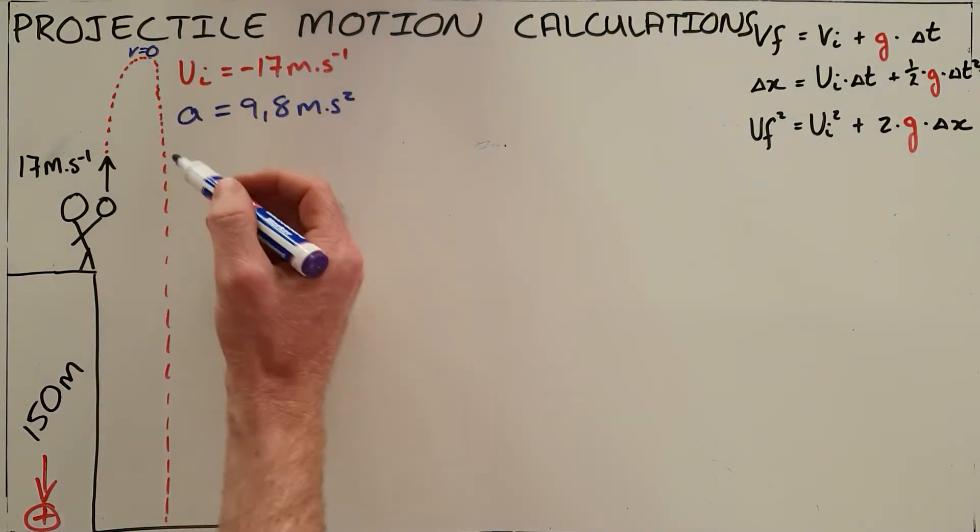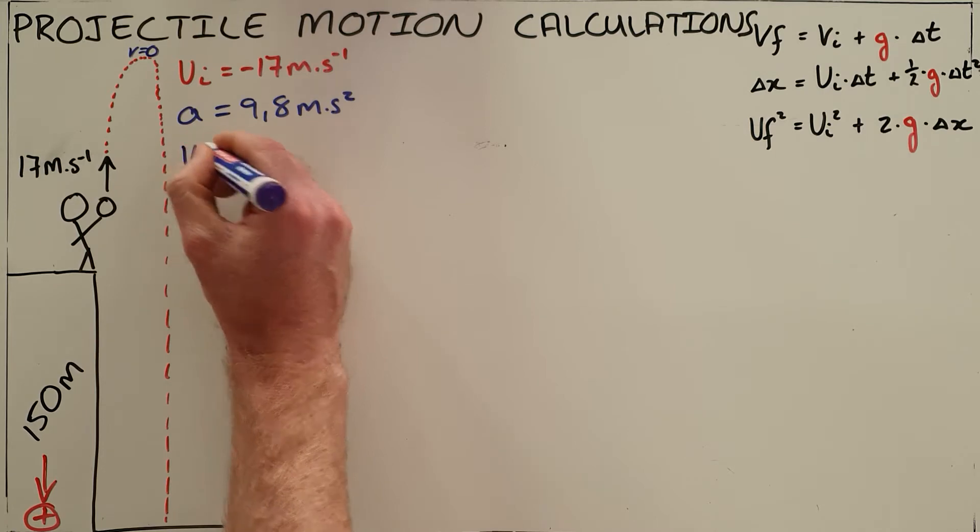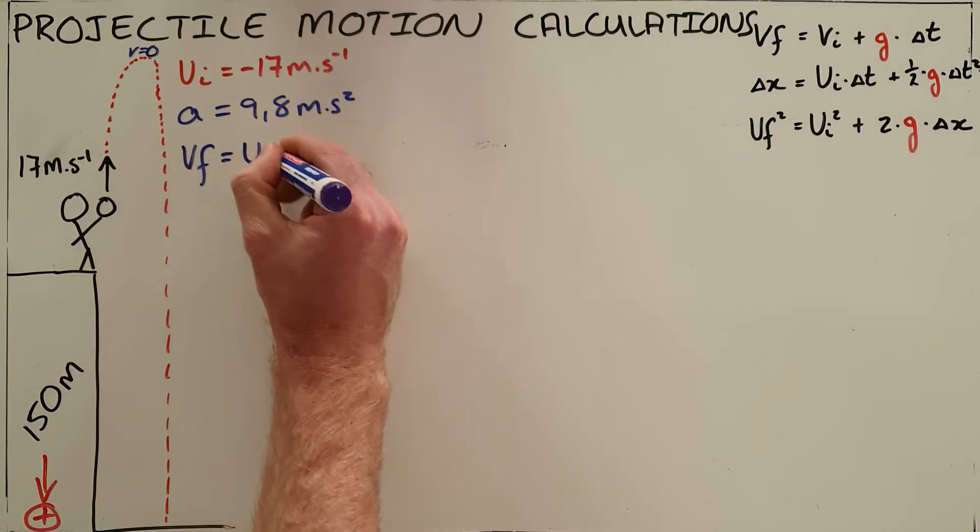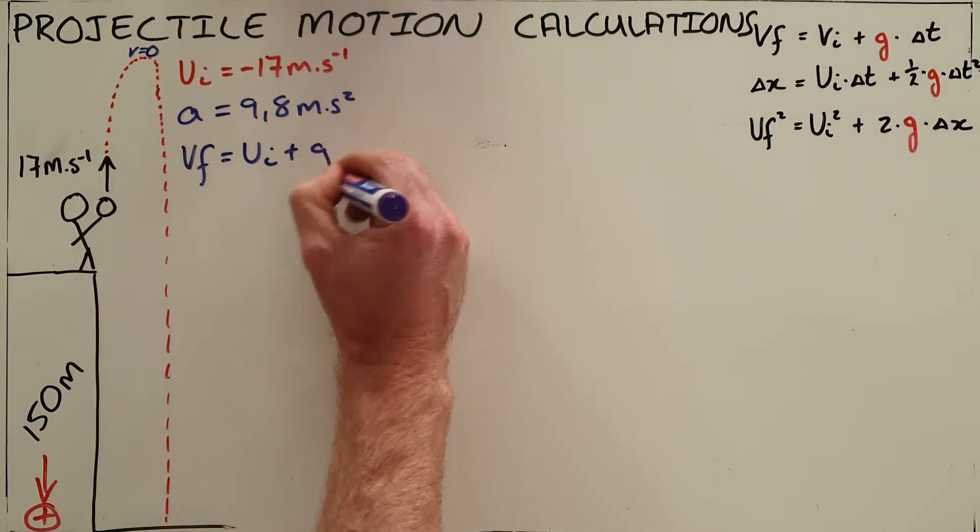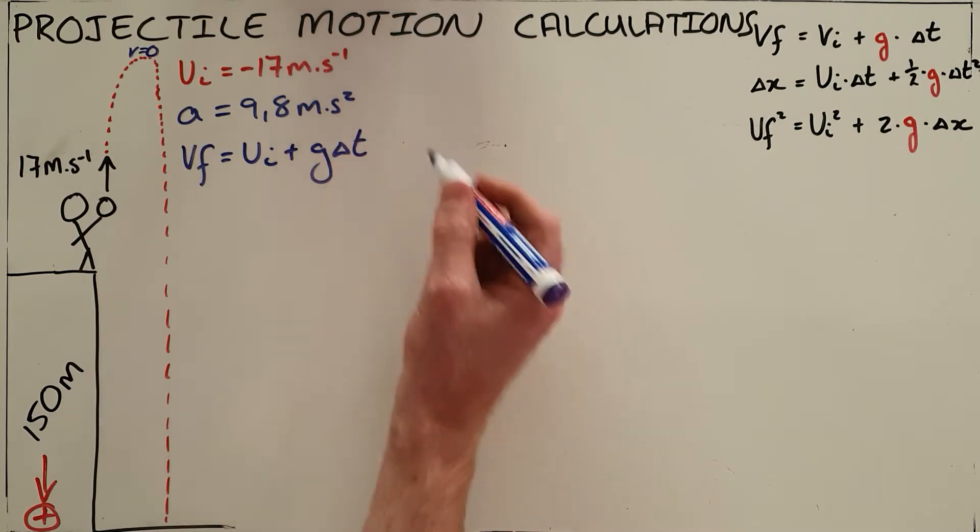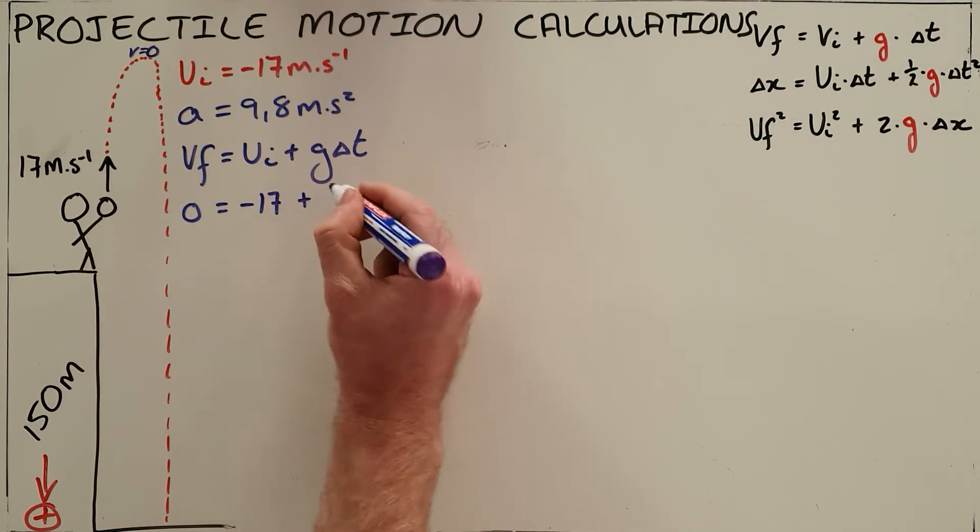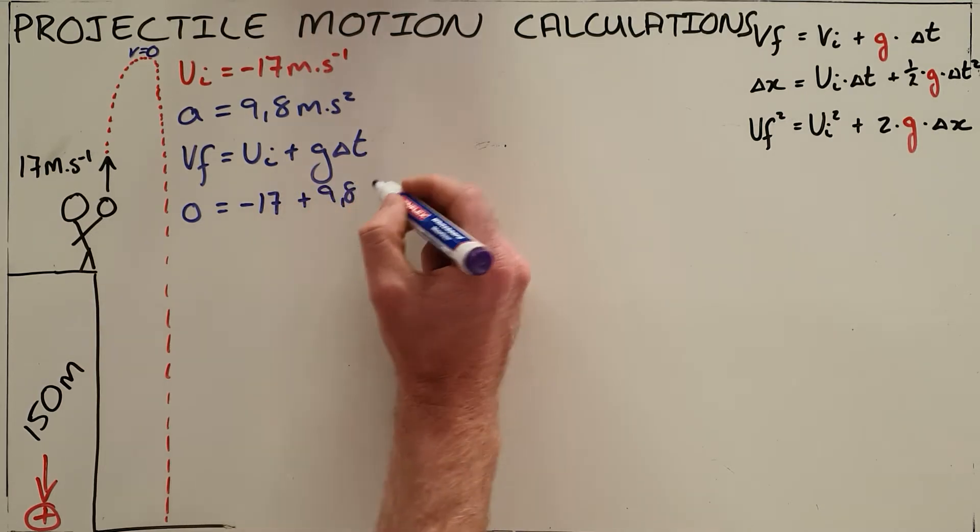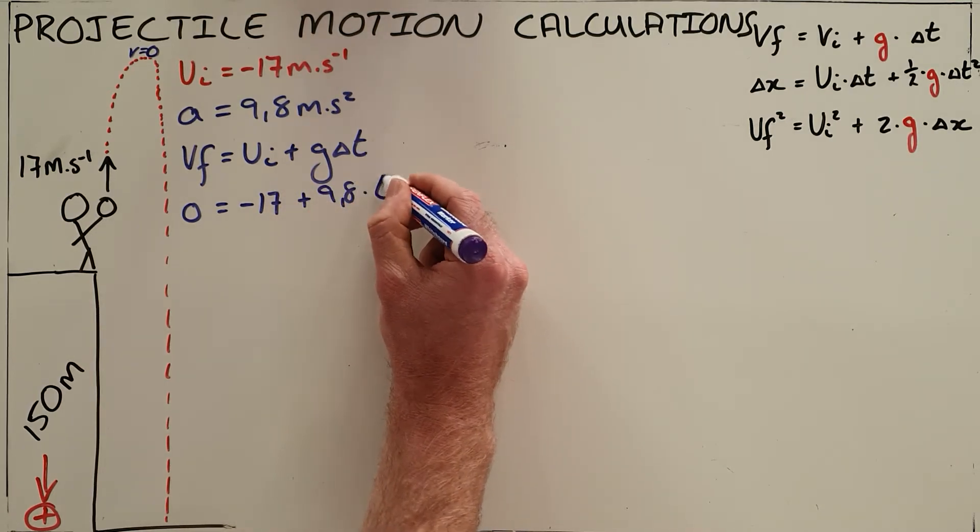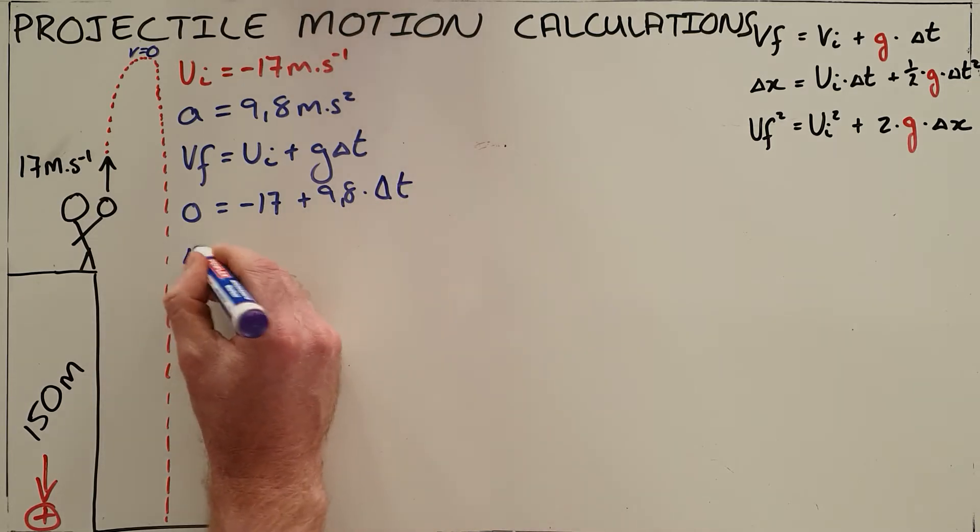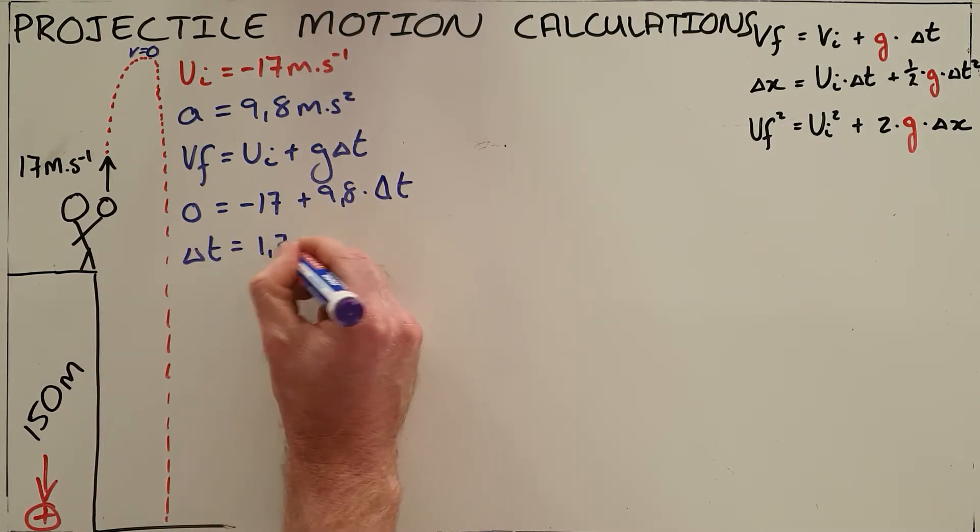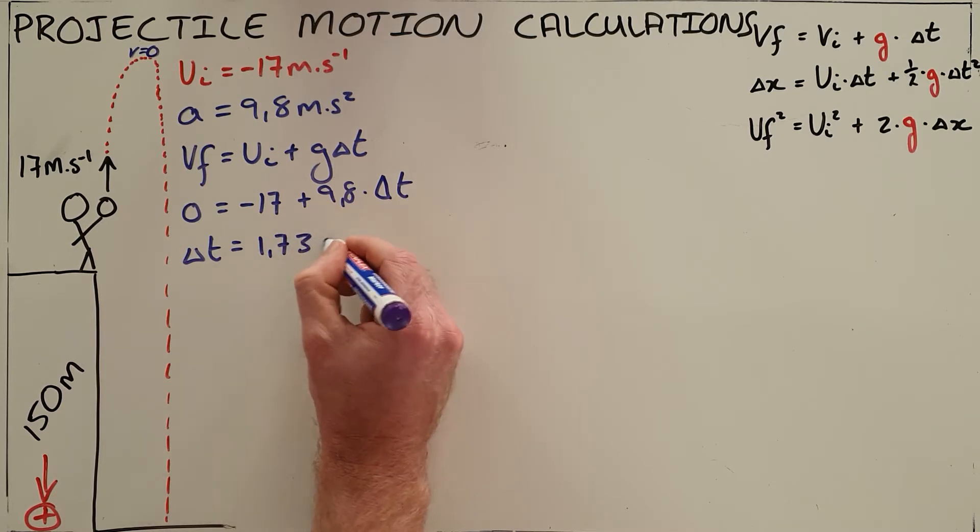Once we understand that the velocity at the maximum height is zero, we can use our first equation of motion to solve for the amount of time that it takes. The final velocity being zero, the initial velocity being negative 17, plus gravitational constant multiplied by the time, and we find that the time taken to reach its maximum height is 1.73 seconds.